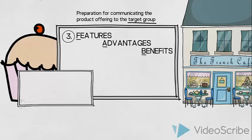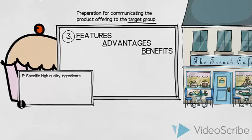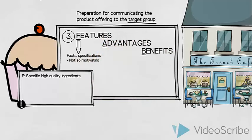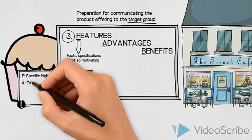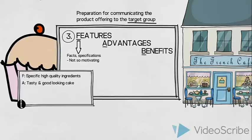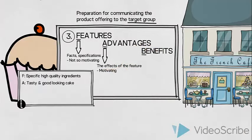Let us look at some of the features in our product offering. The high quality ingredients of our cakes is a feature. So, features are facts or specifications. They are not so motivating in themselves. However, we can translate this feature into an advantage of a better tasting and better looking cake. Advantages are then the effects of the feature and they are somewhat more motivating than the feature itself.